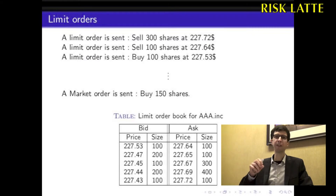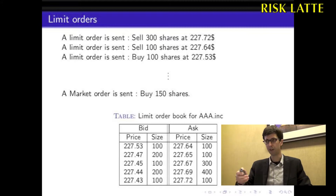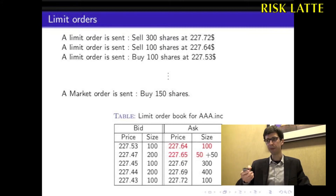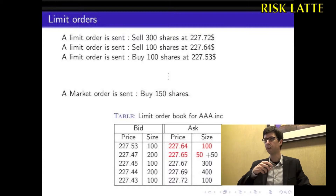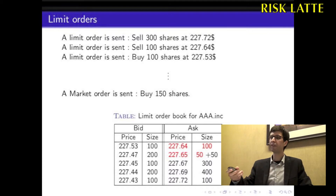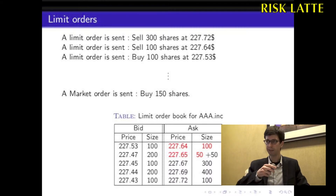Now suppose a market order is sent to buy 150 shares. The trader has to use the ask part of the limit order book to execute the market order. To complete the trade, the trader has to use 100 shares available at $227.64.